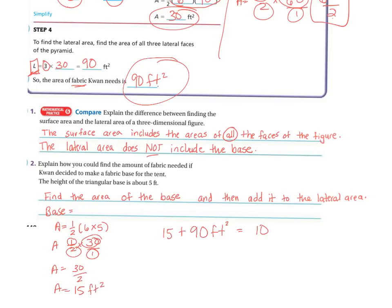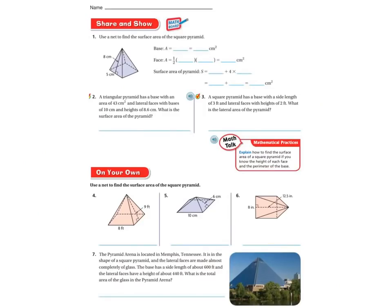We need to make sure we're putting our labels. For your assignment, do problems one through seven — not the back page. Remember: surface area means finding all the sides, so you find the base area and you find each triangle. In a pyramid, make sure you get all of the sides.